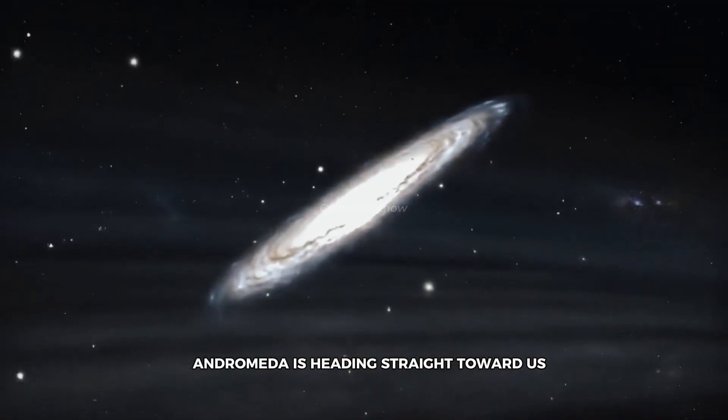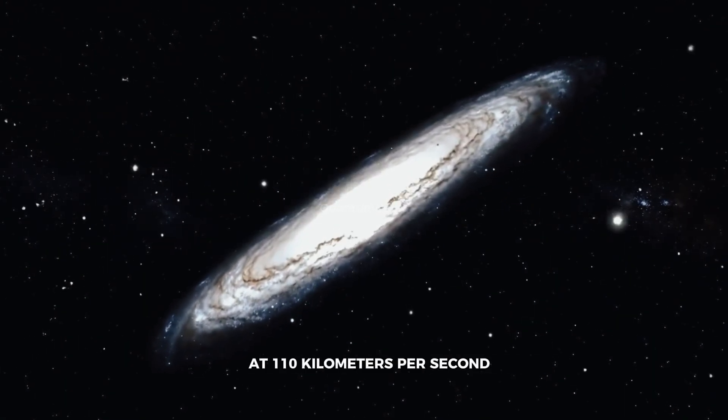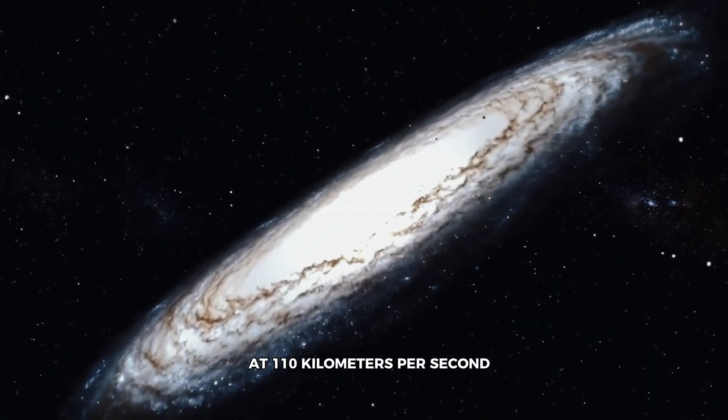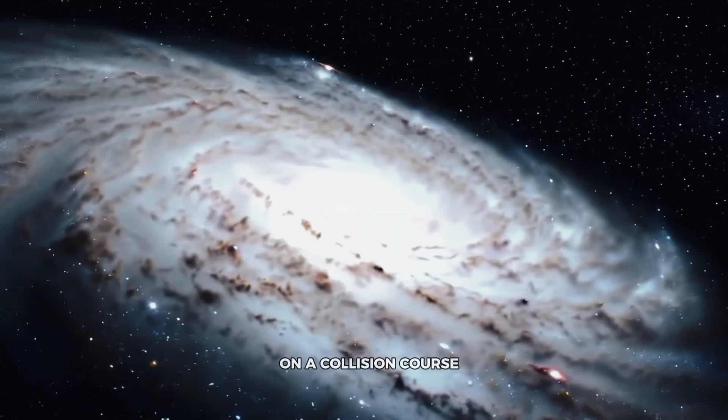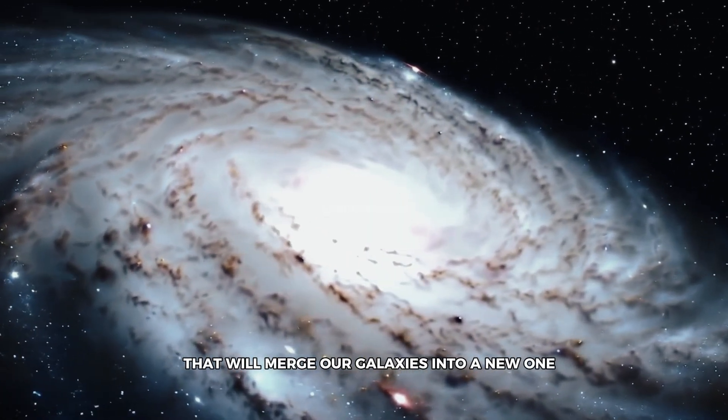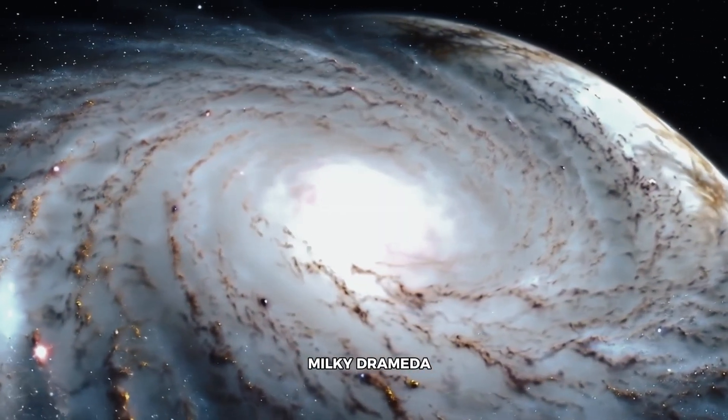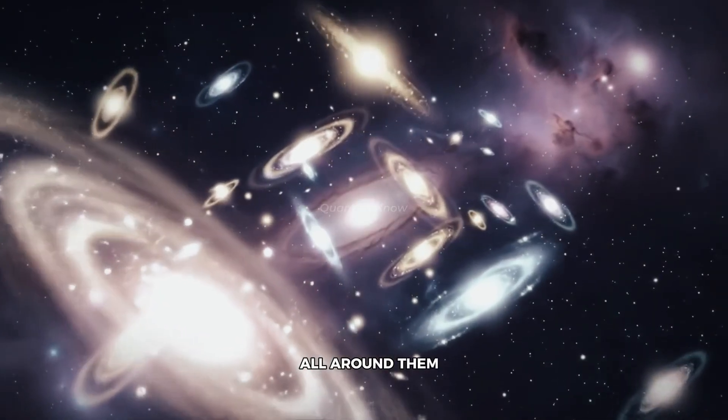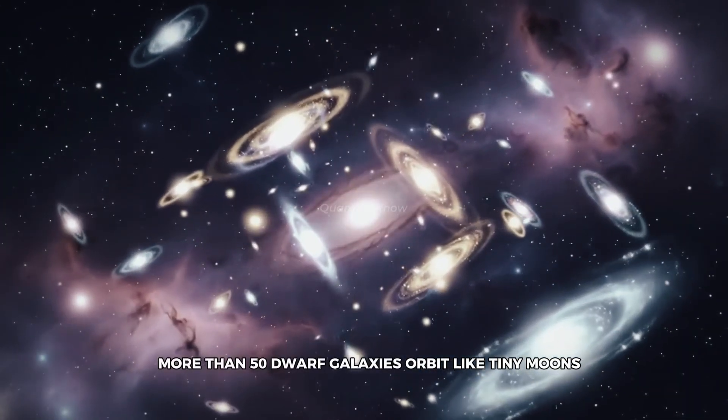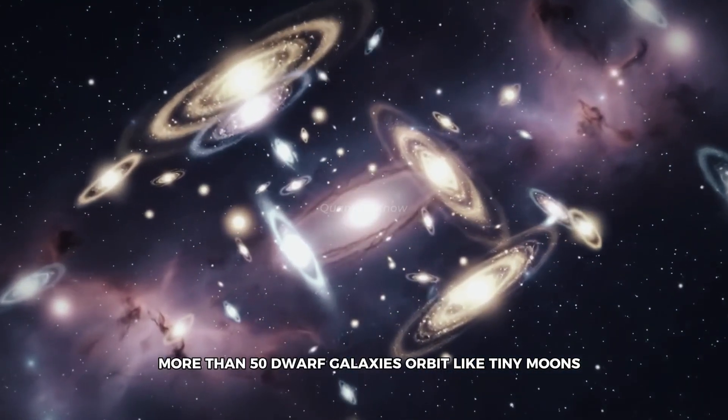Andromeda is heading straight toward us at 110 kilometers per second, on a collision course that will merge our galaxies into a new one, Milkdromeda. All around them, more than 50 dwarf galaxies orbit like tiny moons.